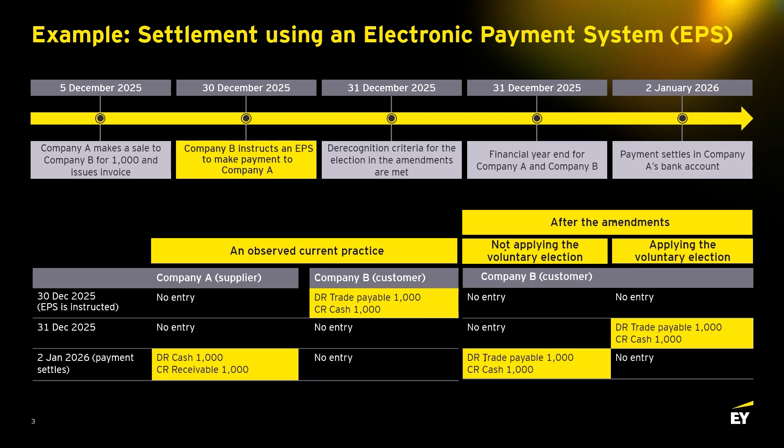The amendments are effective for annual periods beginning on or after the 1st of January 2026, with early adoption permitted. Their use is subject to endorsement in the entity's jurisdiction — as at mid-May 2025, the amendments hadn't been endorsed in the EU but had been endorsed elsewhere, such as the UK. The amendments apply retrospectively, with an adjustment to the opening balance of financial assets and financial liabilities, and the cumulative effect is an adjustment to retained earnings and the opening balance sheet. There is no requirement to restate prior periods.